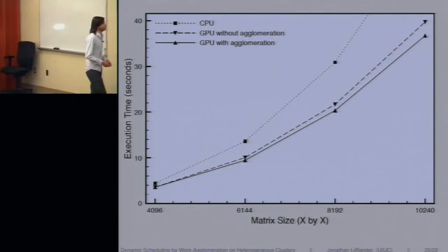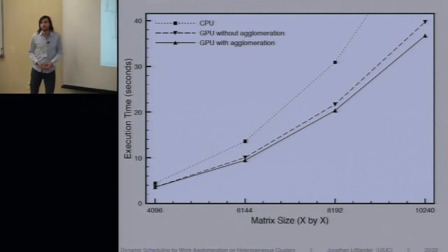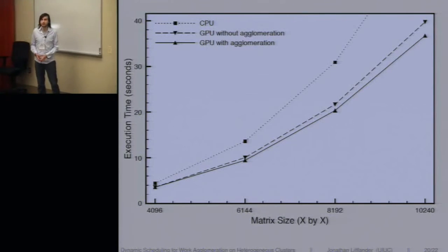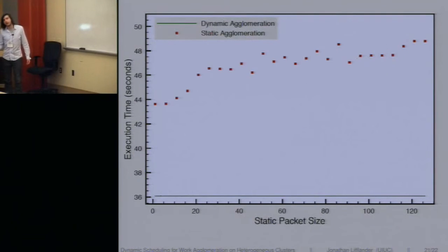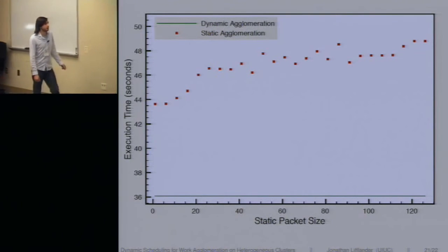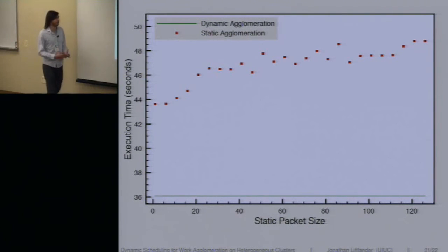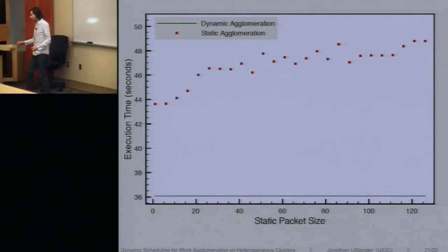Again, agglomeration provides better performance because we're amortizing the overheads of copying and kernel instantiation. In this case, if you fix the static size in LU, you end up bundling together work units that have lower and higher priority, which hurts the execution a lot. Whereas if you let it be fully dynamic, it performs much better because you don't have this bad coupling that the static gets.